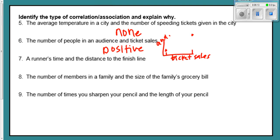Number seven, a runner's time and the distance to the finish line. So again, if this is the time down here, if they've been running for zero seconds, their distance, they've got a long way to go. If they've been running for 20 minutes, they probably don't have very far to go. So in general, this is negative. Y'all try the next two. Pause this video and try the next two. Number eight was positive. Your grocery bill goes up the more people you have in your family, most likely. The number of times you sharpen your pencil and the length of your pencil, that's actually negative. If you've sharpened your pencil 20 times, then your pencil's actually really short.